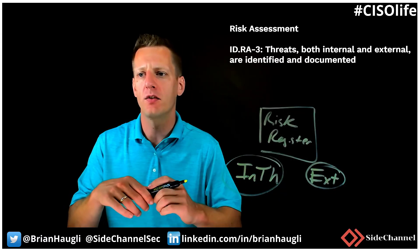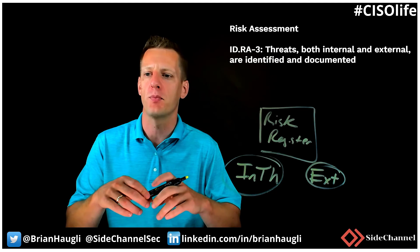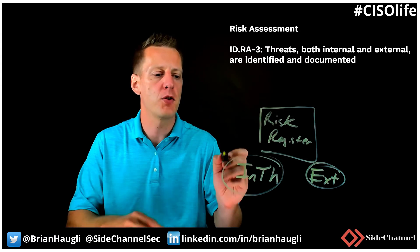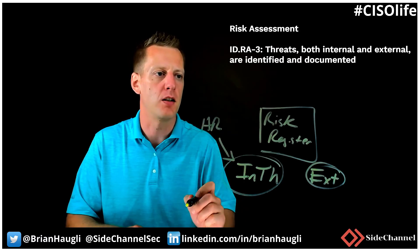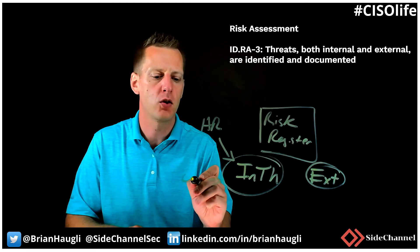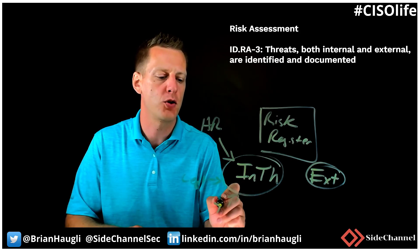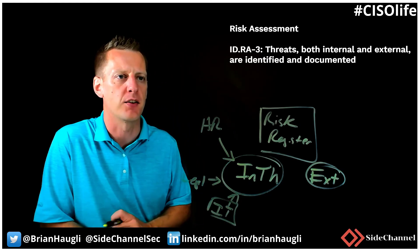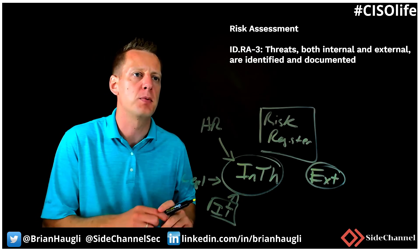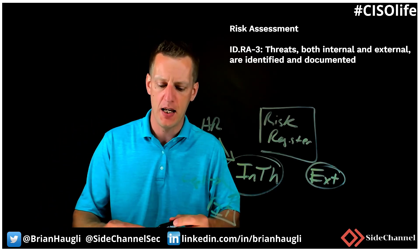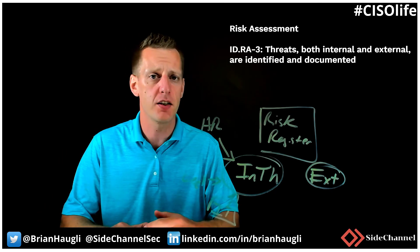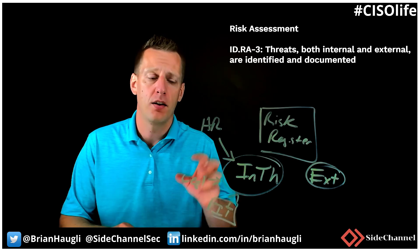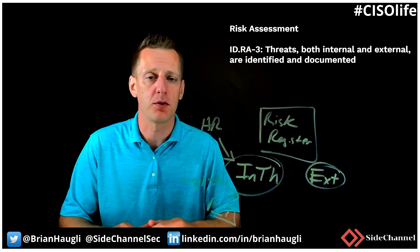Another question back to insider threat: does the organization implement an insider threat program that includes cross-discipline incident and threat response team actions? Are you involving your HR team and your legal team? This should not be viewed as purely an IT issue — you really need the entire team together. These are areas we need to be looking at as CSOs, security practitioners, and leaders. ID RA-3 is a key example of one area that needs to be addressed within the risk assessment process.